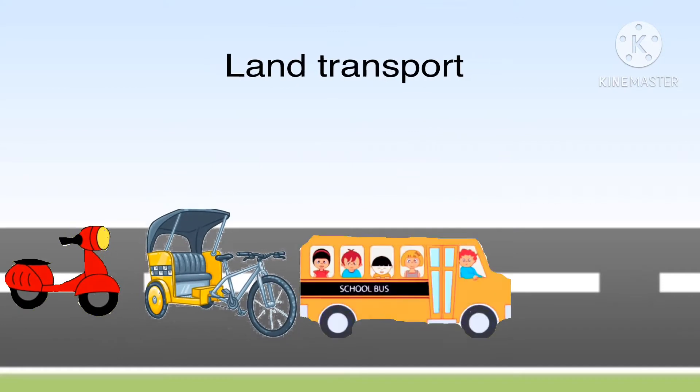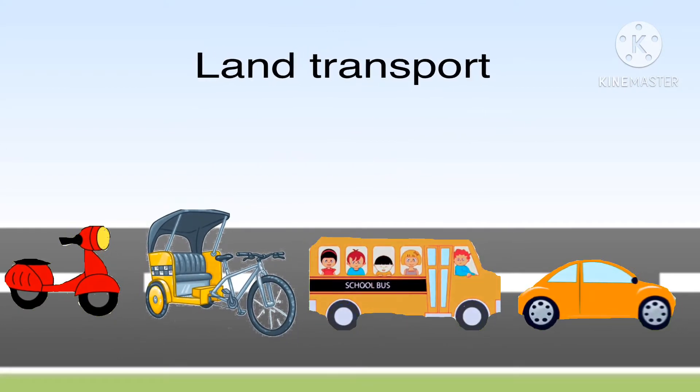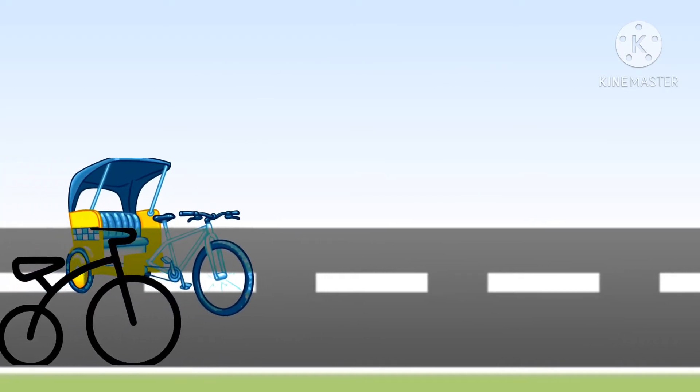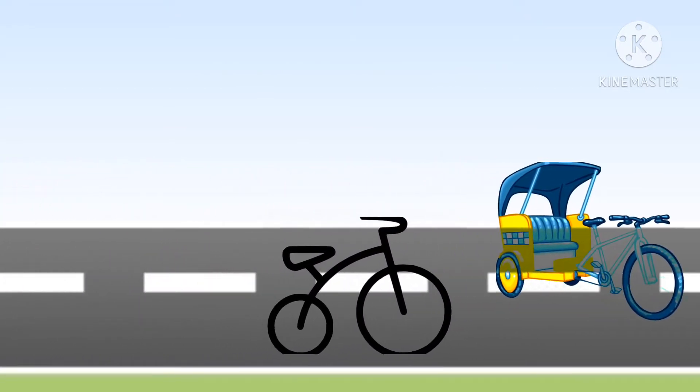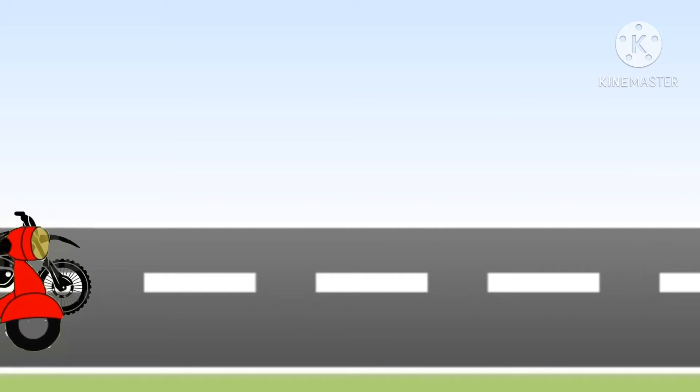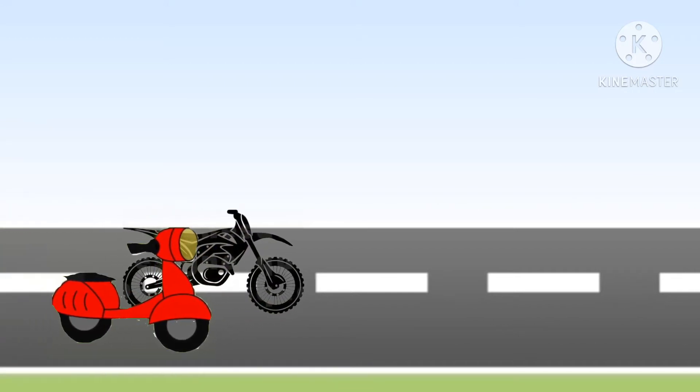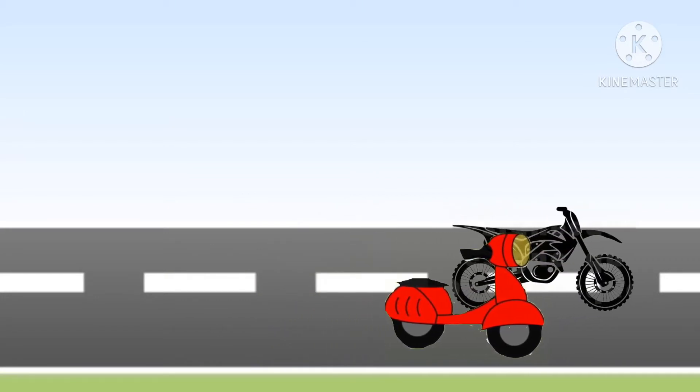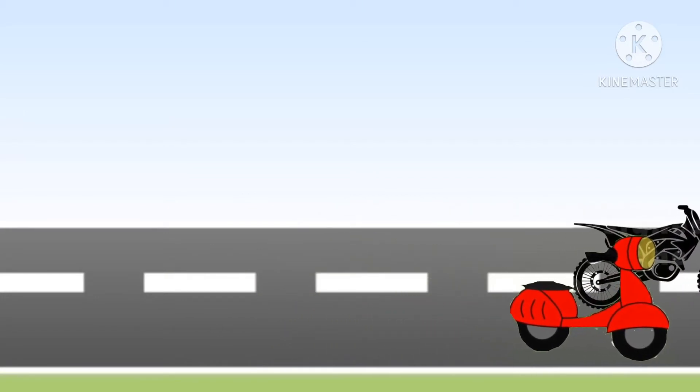Let us first learn about land transportation. It is the mode of transportation for goods and passengers on road. Different types of vehicles are used to cover different distances. Bicycles, rickshaw, bikes and scooters are generally used for short distances.